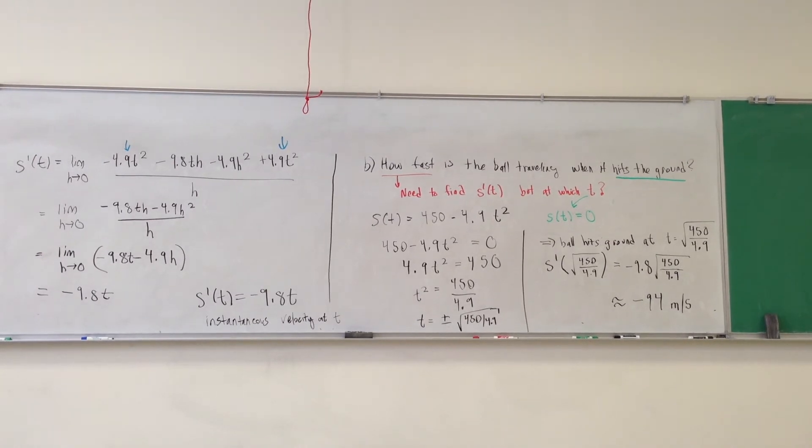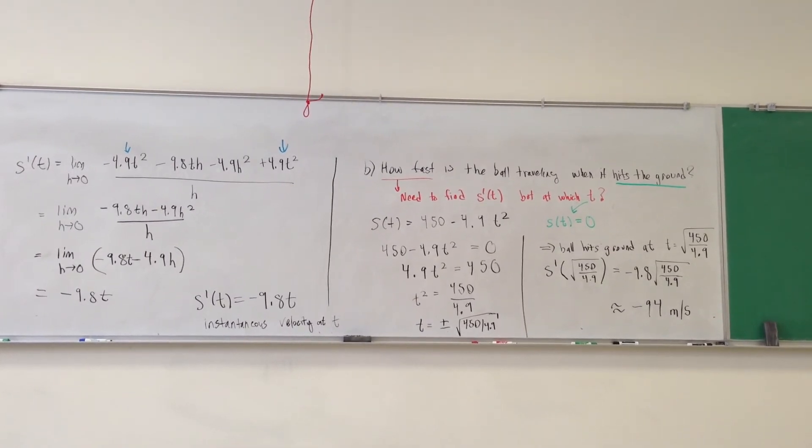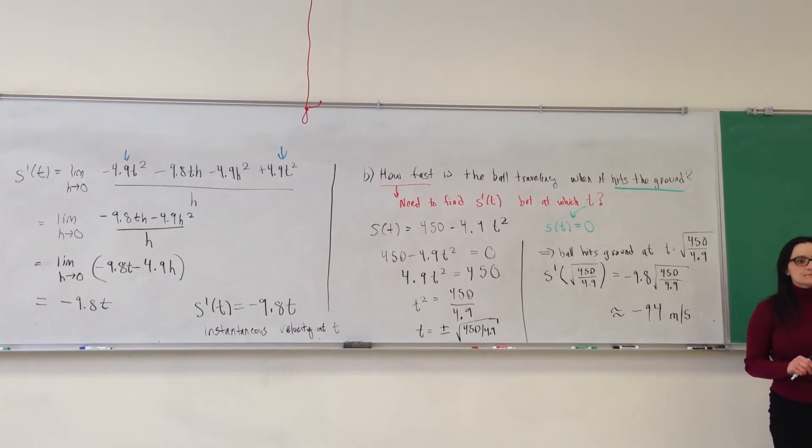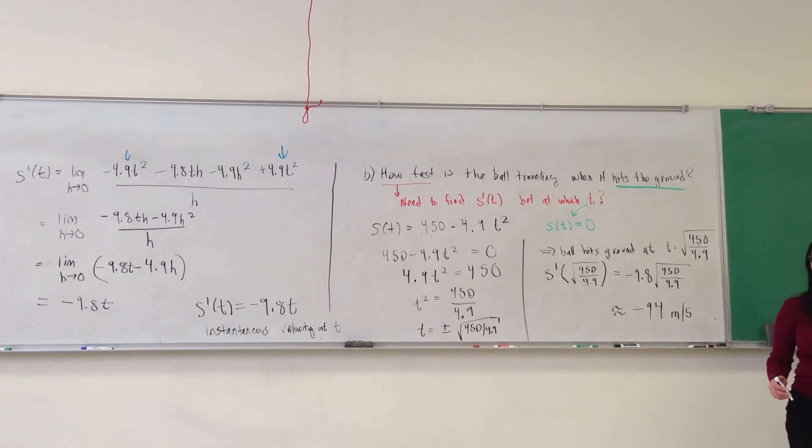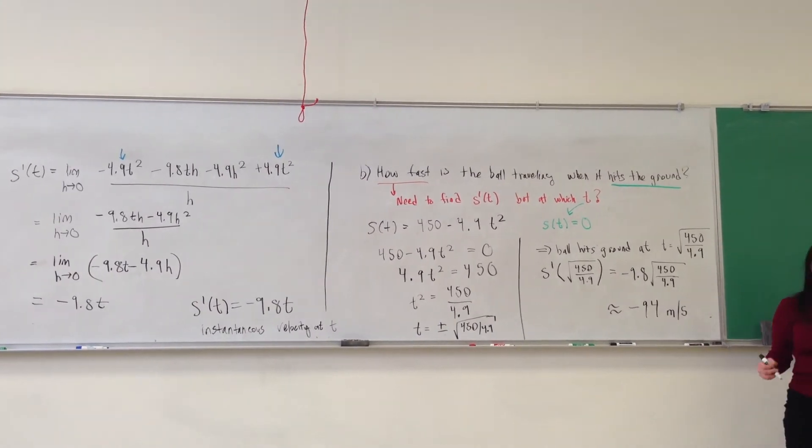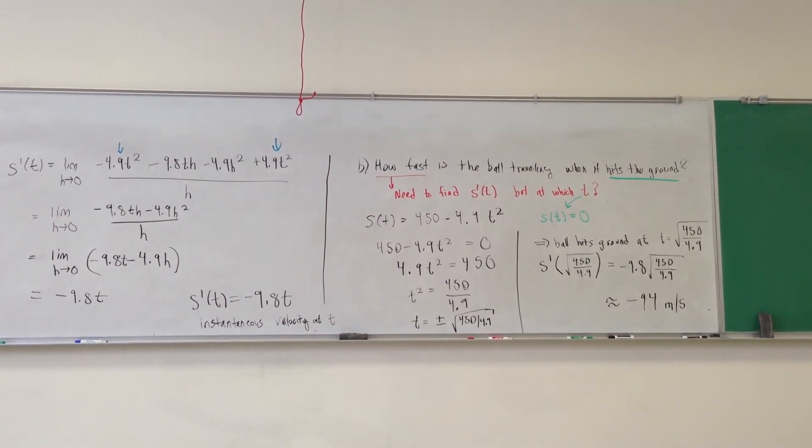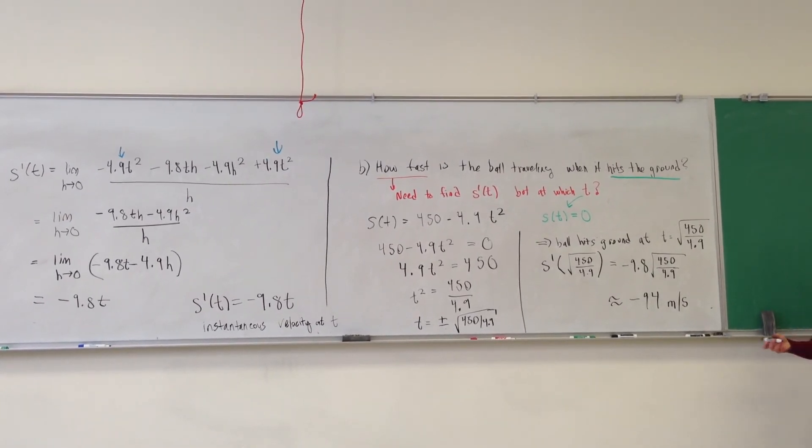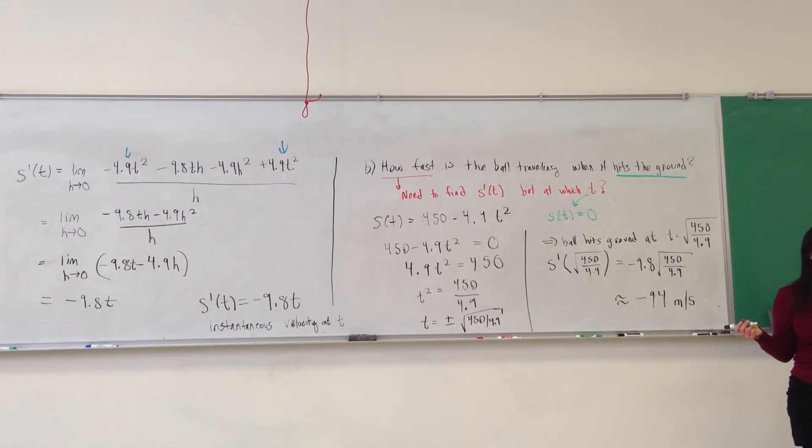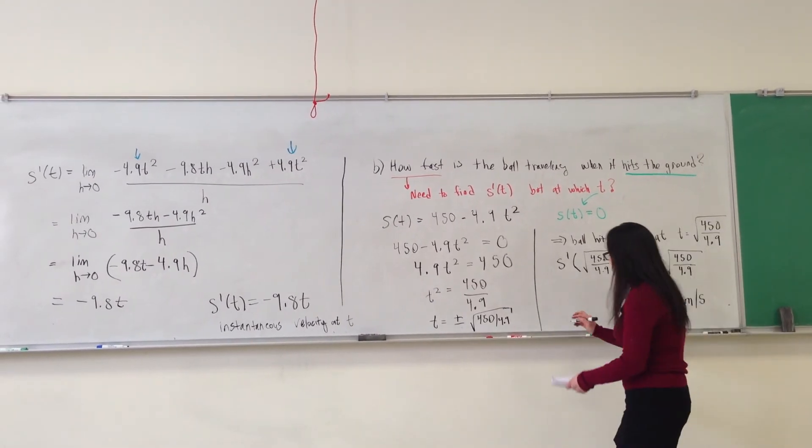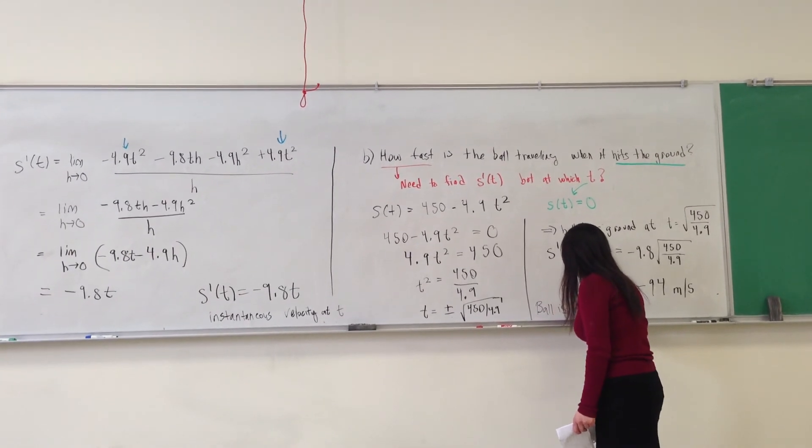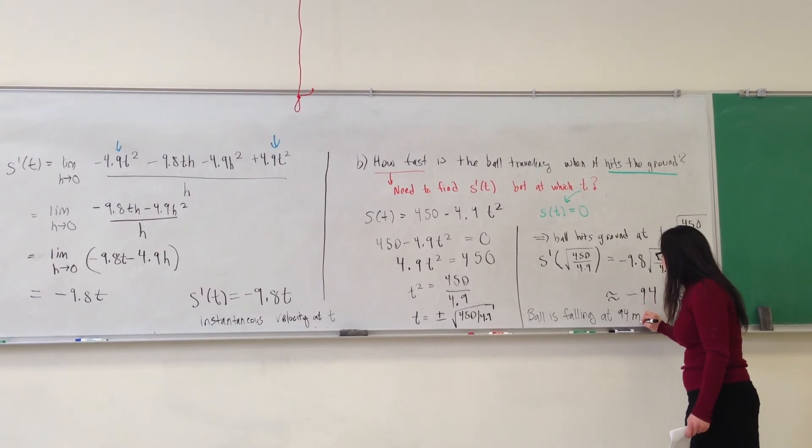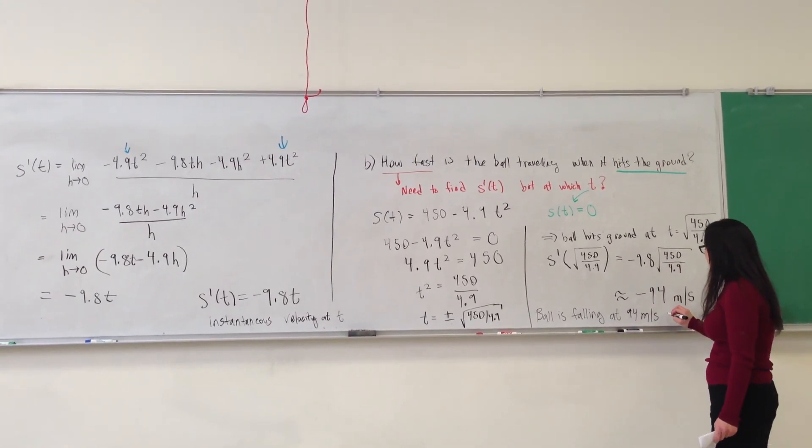This is the velocity. This is the instantaneous velocity of the ball at the time when it hits the ground. So why is it negative? It's going down. Traveling downward. So the negative sign indicates that the ball is falling at this time. So to answer the question, how fast is the ball traveling? That would be 94 meters per second, right? So the ball is falling at a rate of 94 meters per second when it hits the ground.